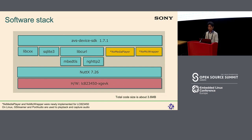The AVS device SDK consists of several open-source components such as mbedTLS and ngHTTP2 and so on. I had to implement a custom media player and micro wrapper because GStreamer for Linux is too large to port. However, the total code size of this system was about 3.6 megabytes including the NATX kernel. To run the SDK, I had to use SPI flash in XIP mode.